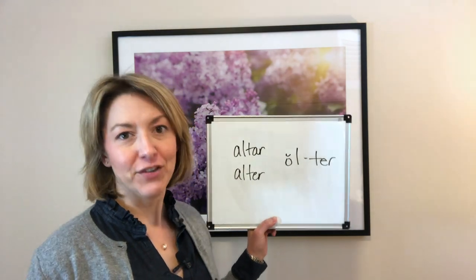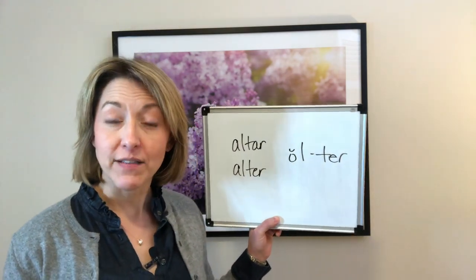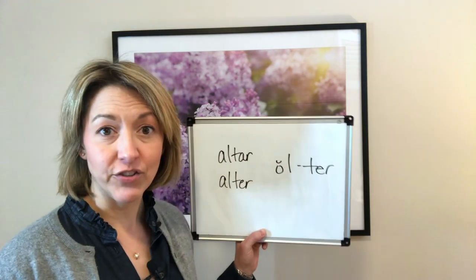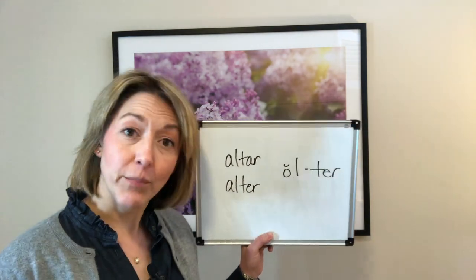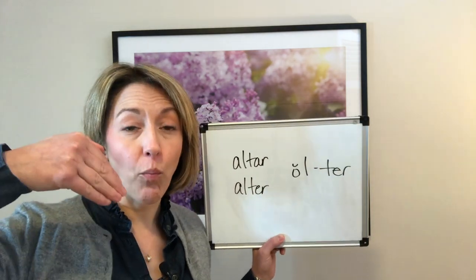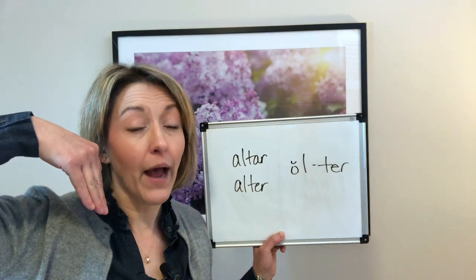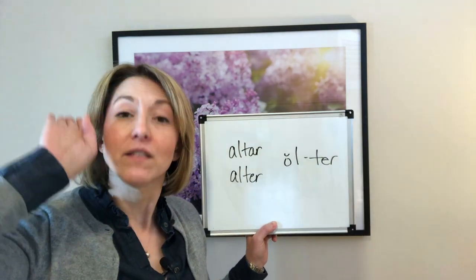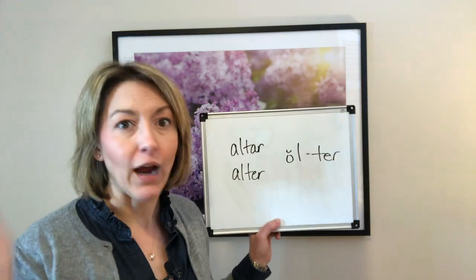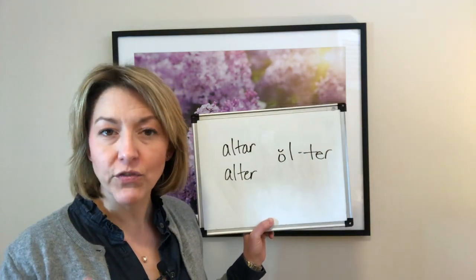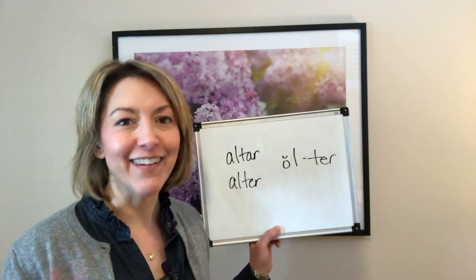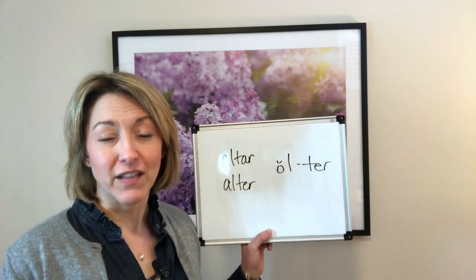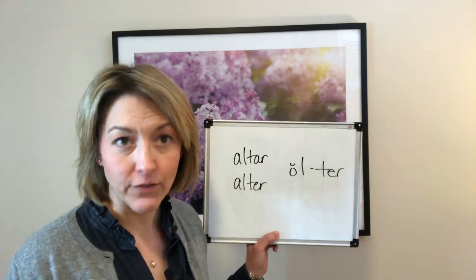To make the 'er' sound you have a few options — the key is that your tongue is not touching your teeth. The tip of your tongue can be either pointed down with the back of your tongue pulled up, or the back of your tongue can be pulled up with the tip of your tongue flipped back. Whichever works for you, the key is: do not touch your teeth. If you touch your teeth it's going to sound like an L sound.